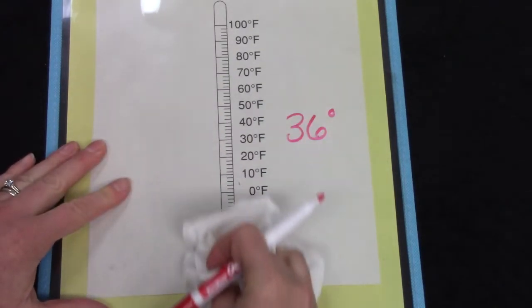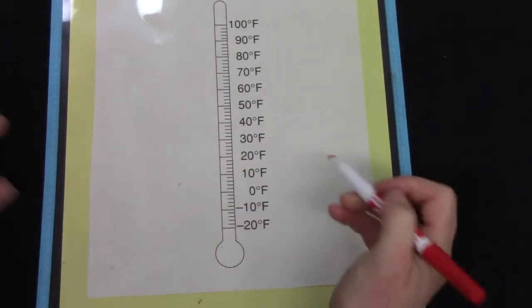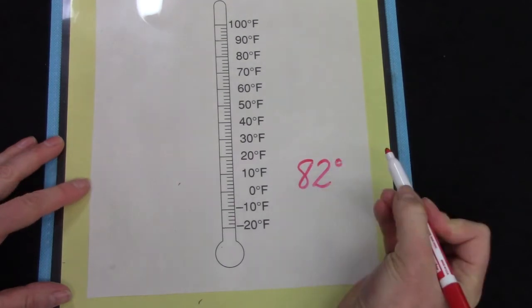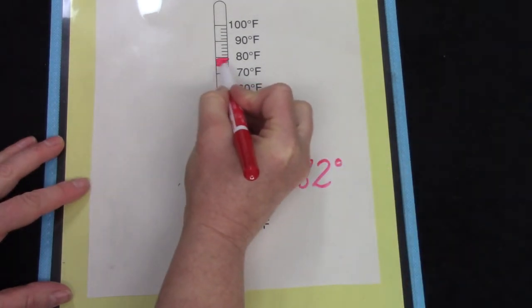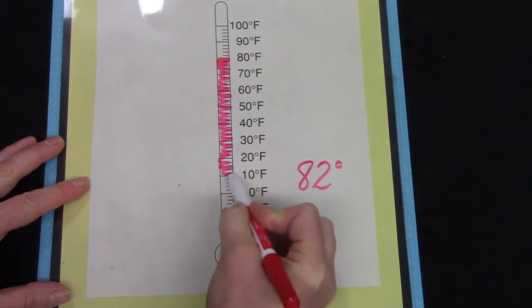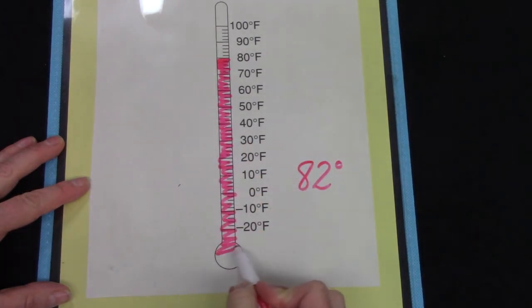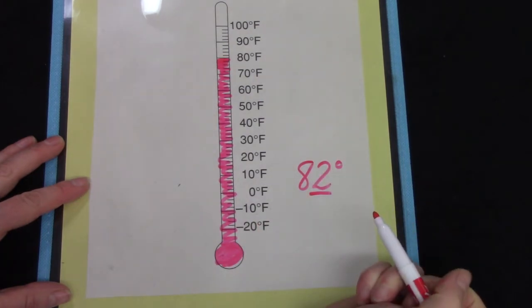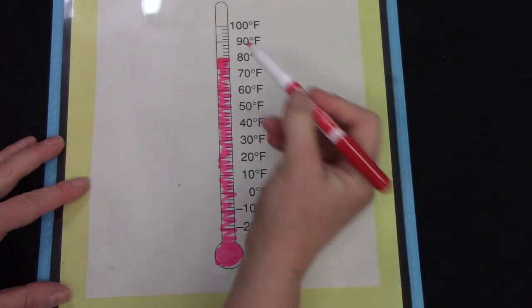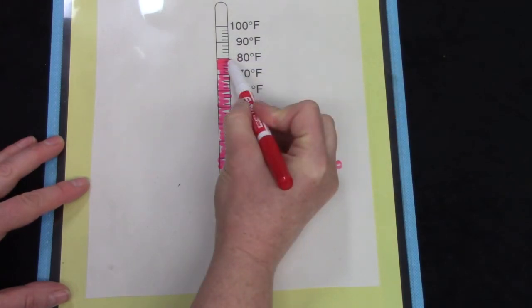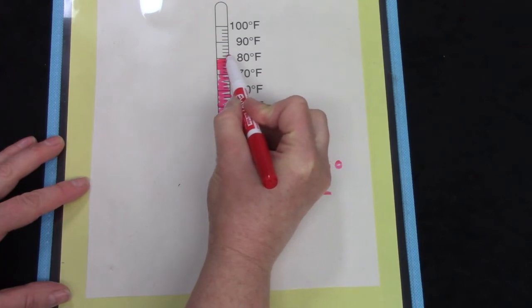Let's try another one. What about 82 degrees? Well, it's pretty easy to find 80 on our thermometer. And I'll fill in all the way up to 80. If I wanted to go to 82, how many jumps or how many lines would I go above 80? It's just one line above 80 because each line we count by 2. 82.